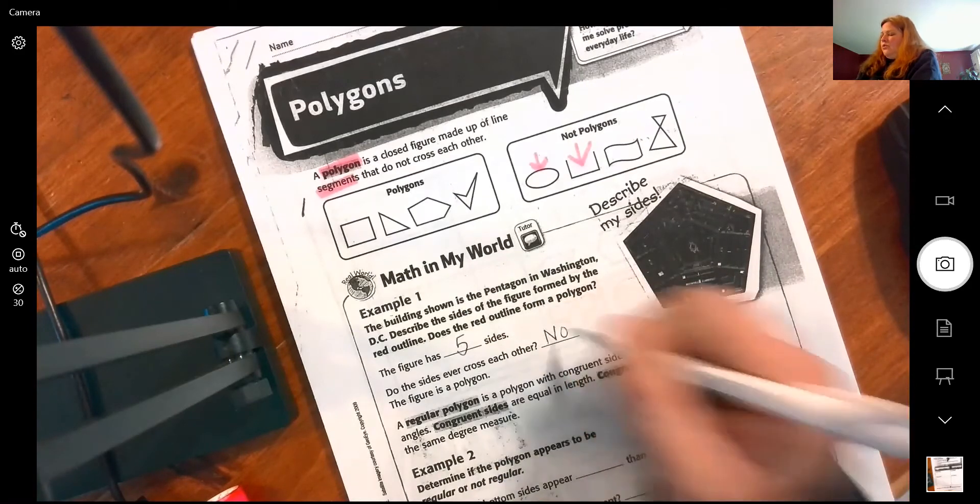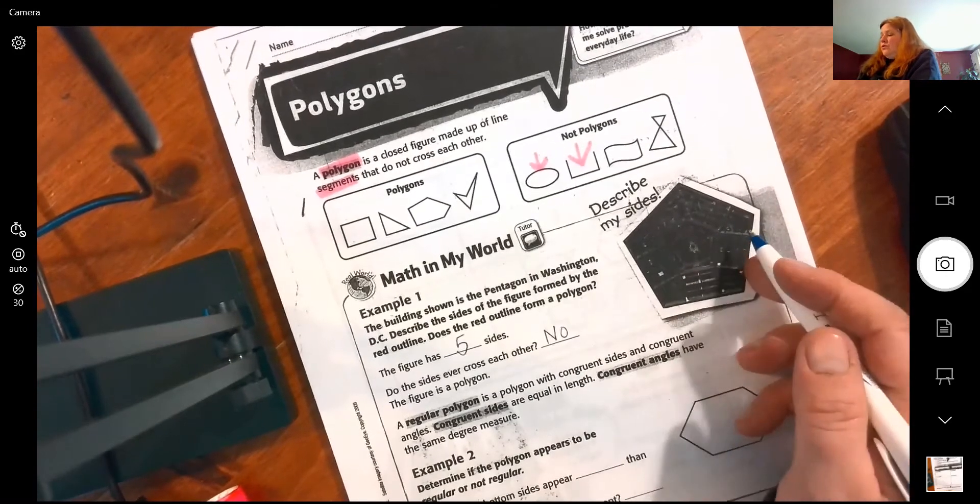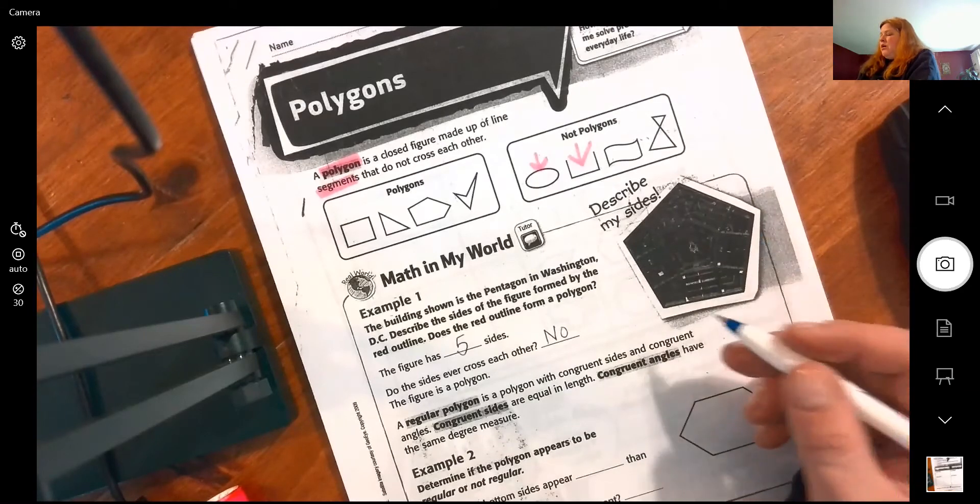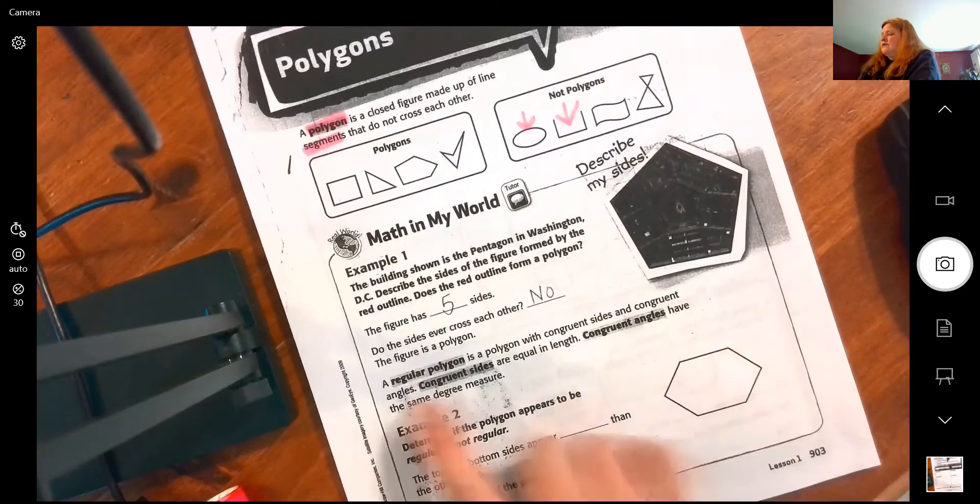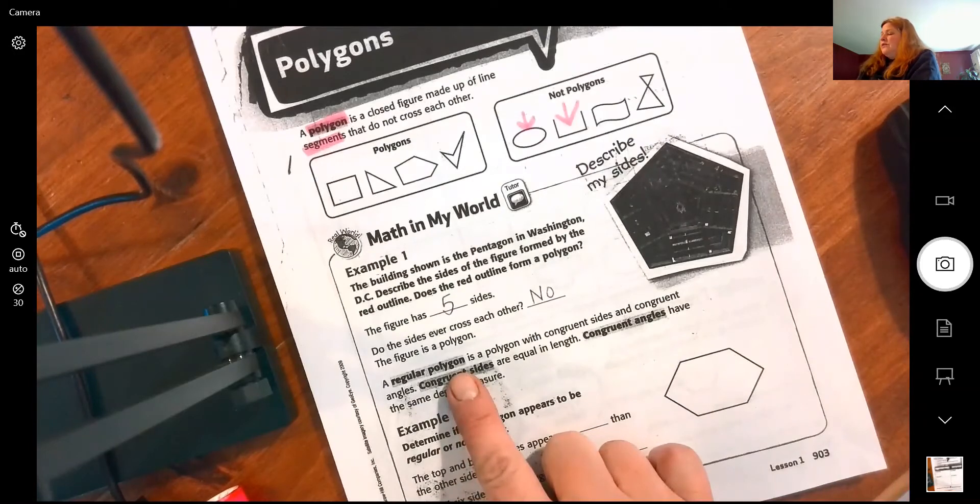So it is a polygon, and in fact it's a regular polygon because it has equal or congruent sides and congruent angles.